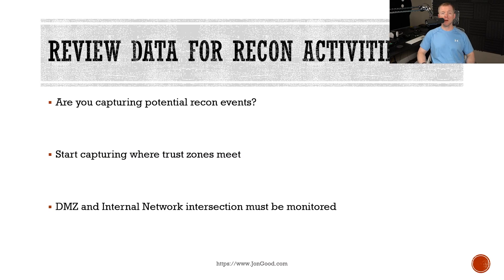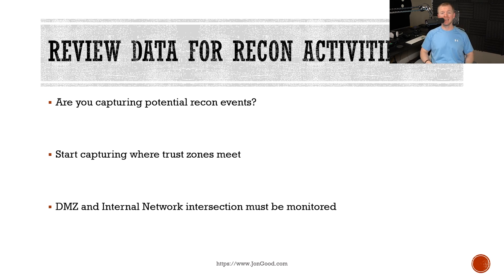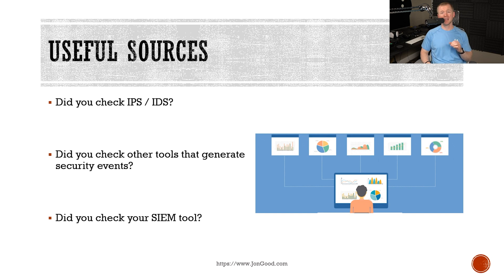One of the most important requirements in detecting reconnaissance activities is to capture traffic associated to those activities. A good starting point is where different trust zones in your network meet — for example, where your internal network meets with the demilitarized zone or the DMZ. Intrusion detection systems and intrusion prevention systems can identify a lot of traditionally suspicious behavior, things like vulnerability scanners, but we need to know what normal activity looks like because that can help us catch traffic that's not flagged by a tool.